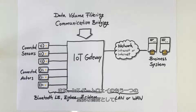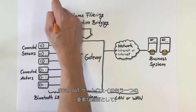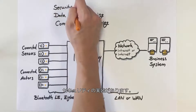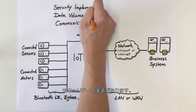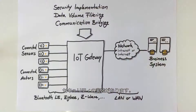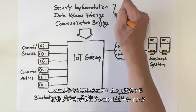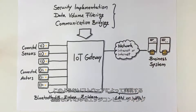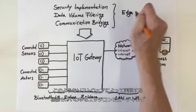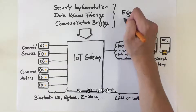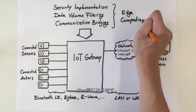Another aspect that can be provided by the IoT gateway is security implementation. Software-driven capabilities like these are part of what is known as edge computing.